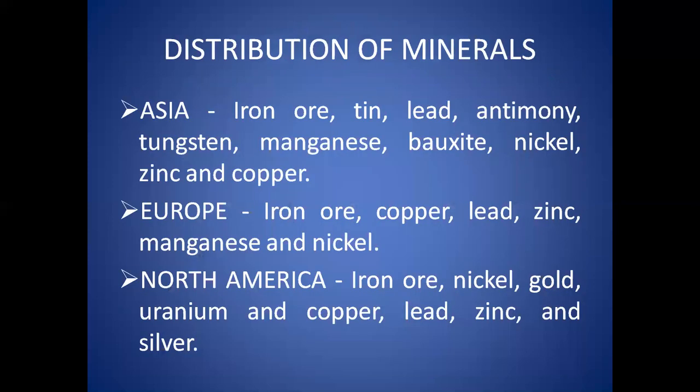Now let's see how minerals are distributed across the various continents on earth. China and India have large iron ore deposits. The continent produces more than half of the world's tin. China, Malaysia and Indonesia are among the world's leading tin producers. China also leads in production of lead, antimony and tungsten. Asia also has deposits of manganese, bauxite, nickel, zinc and copper.